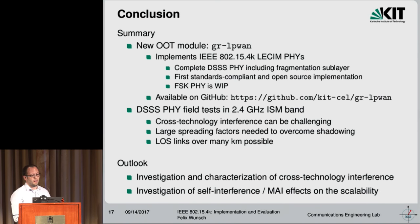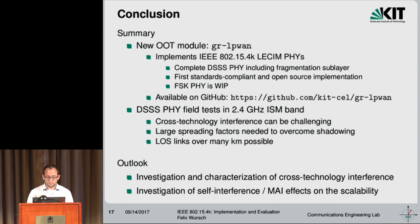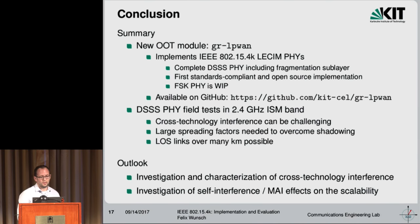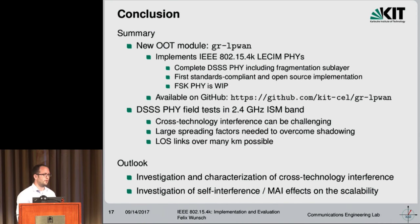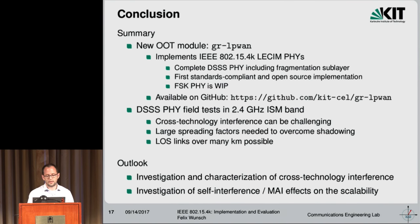For the future, I'm looking into the characterization of the cross-technology interference — I really want to quantify how much impact Wi-Fi predominantly has on this kind of technology, and if 2.4 gigahertz is a viable choice for these networks. What would also be very interesting, but admittedly more complex to do experimentally, is the investigation of self-interference or multiple-access interference in highly or even fully scaled networks. If you have any questions, I'm happy to answer them. Thanks.